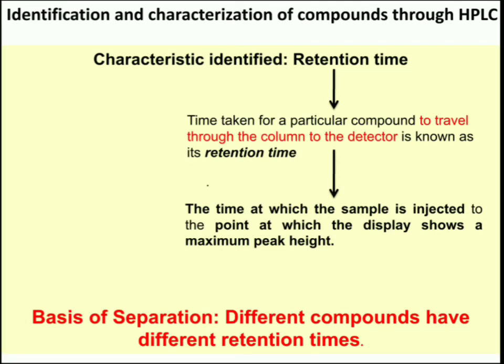Identification and characterization of compounds through HPLC is done by the measurement of retention time. Retention time is the time taken for a particular compound to travel through the column to the detector. This time is measured from the time at which the sample is injected to the point at which the display shows a maximum peak height for that compound. The basis of separation is that different compounds have different retention times.